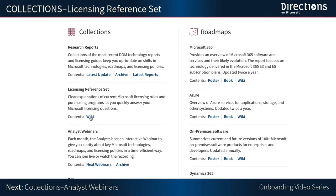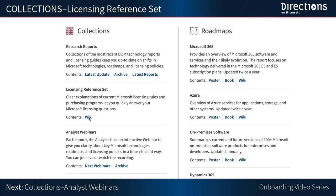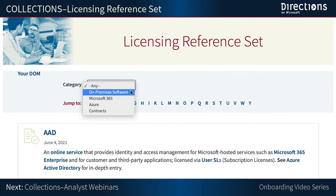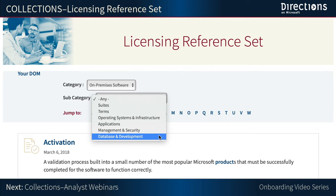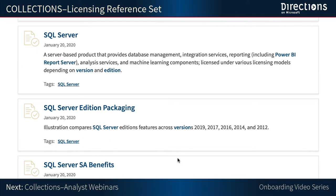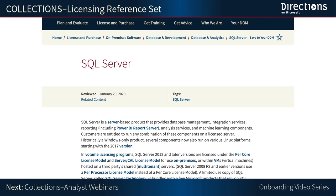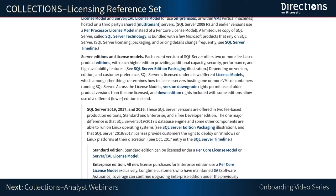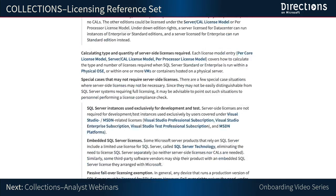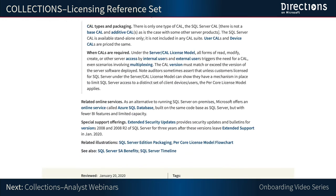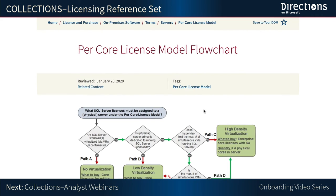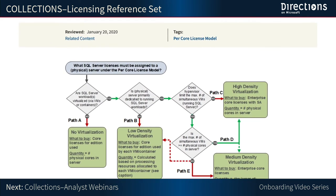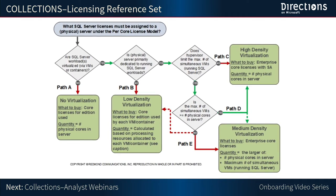Let's head back to the collections area on your DOM. Let's look at the licensing reference set entry for the next example, SQL Server. Here you have, all in one place, the licensing rules for every supported version of SQL Server. You will also find information to help you calculate the type and quantity of server-side licenses you will need to purchase for new server machines, as well as information about special cases that may not require server-side licenses. Remember to always check for illustrations and timelines at the bottom of every licensing reference set entry. Here is a link to a diagram that shows you how to calculate the number of core licenses you need for a particular machine under the per-core license model for SQL Server.